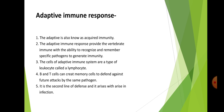Adaptive immunity, also known as acquired immunity, provides the vertebrate immune system with the ability to recognize and remember specific pathogens to generate immunity. The cells of the adaptive immune system are a type of leukocyte called lymphocytes. B and T cells can create memory cells to defend against future attacks by the same pathogen. It is the second line of defense and arises with a rise in infection.